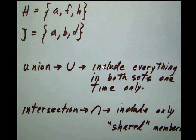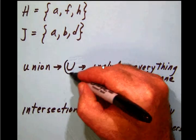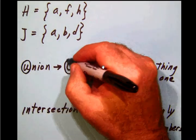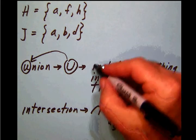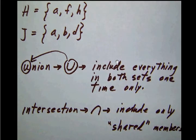Whenever we have the union symbol, we will use this kind of upright horseshoe. I like to think about this as U stands for union. U for union. And basically what that means is we're going to include everything that is in both sets, but we're only going to do that one time only. So we're going to start listing things.